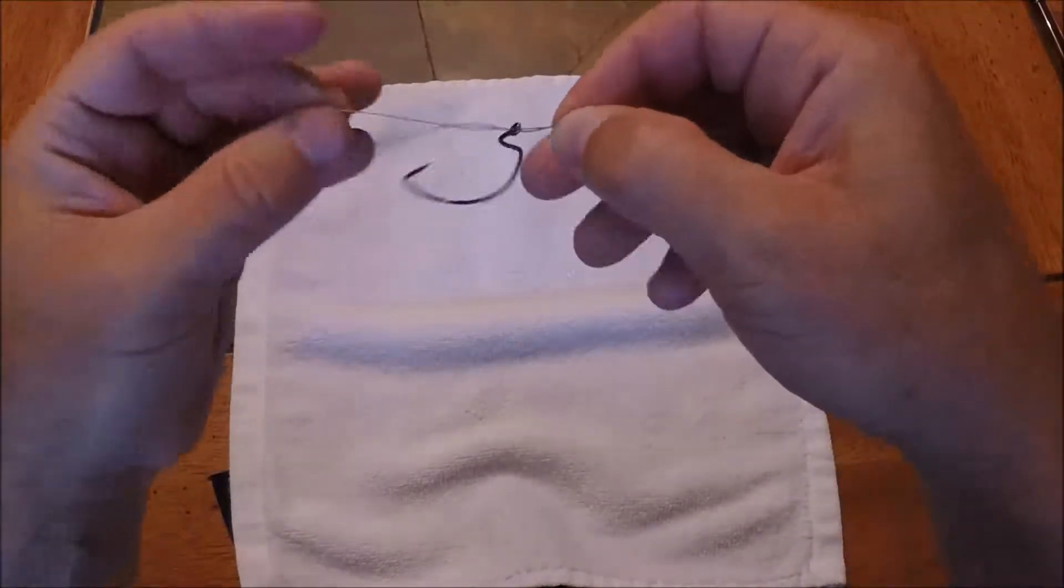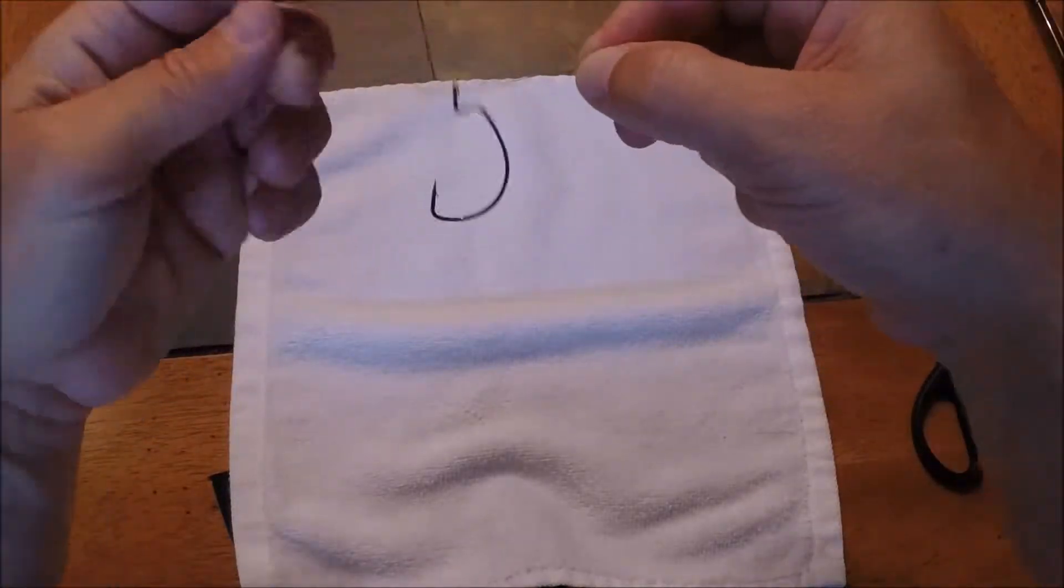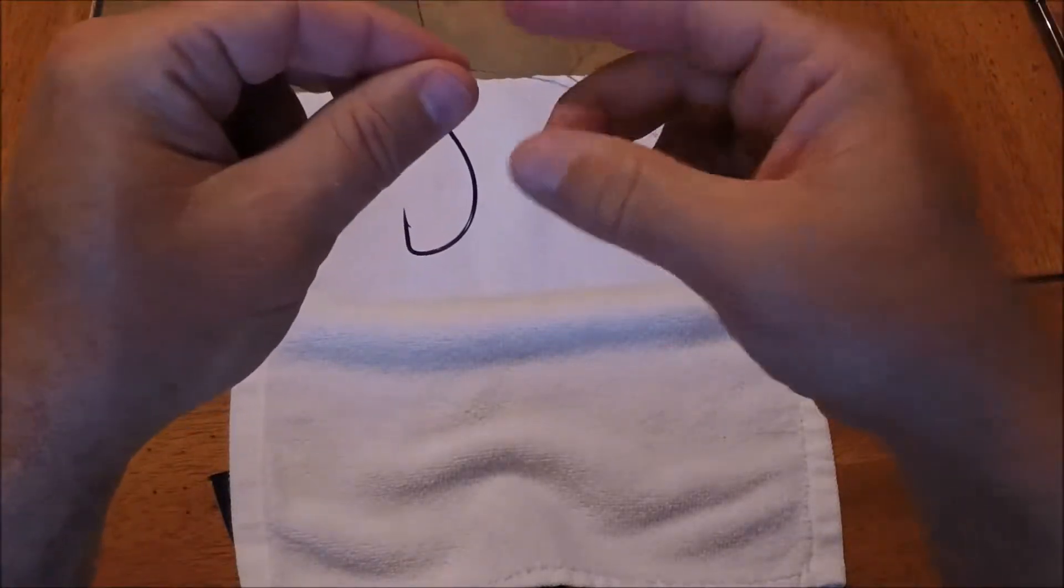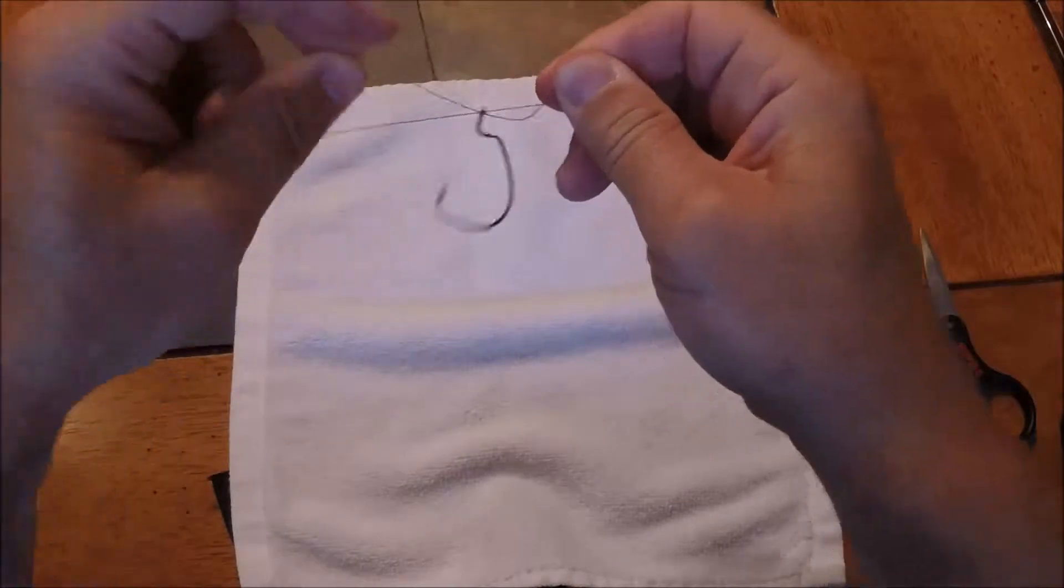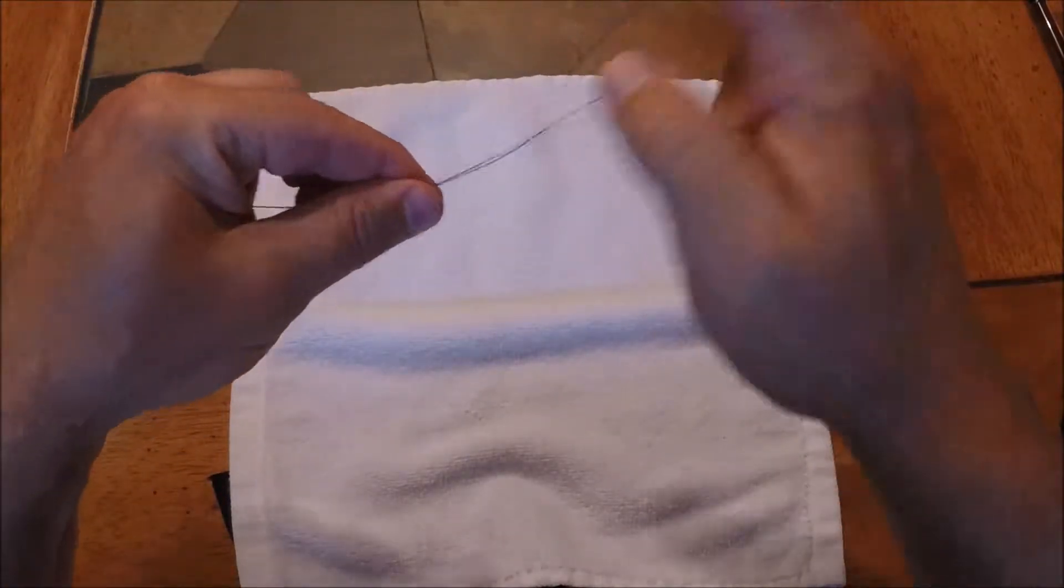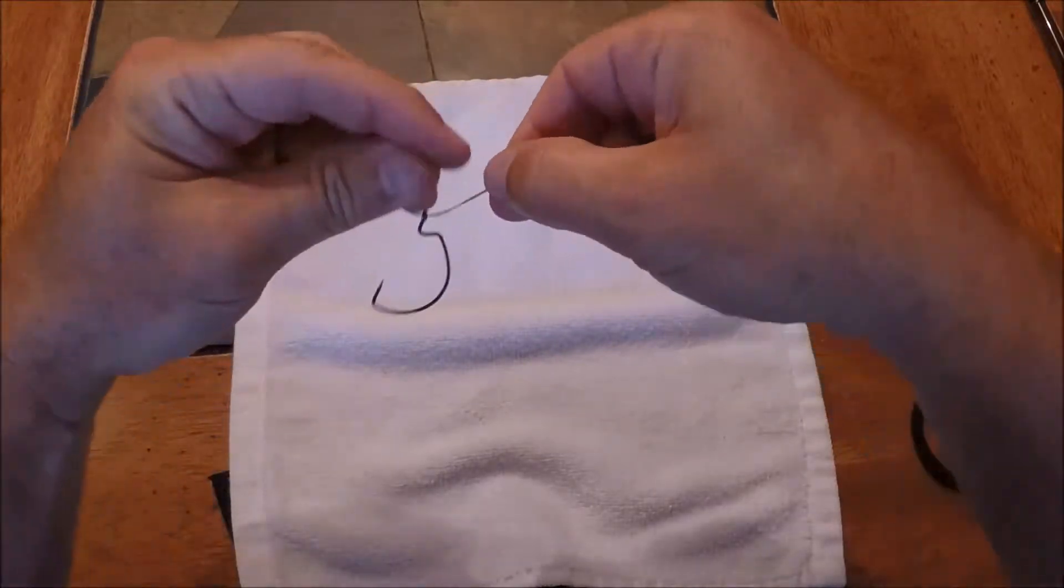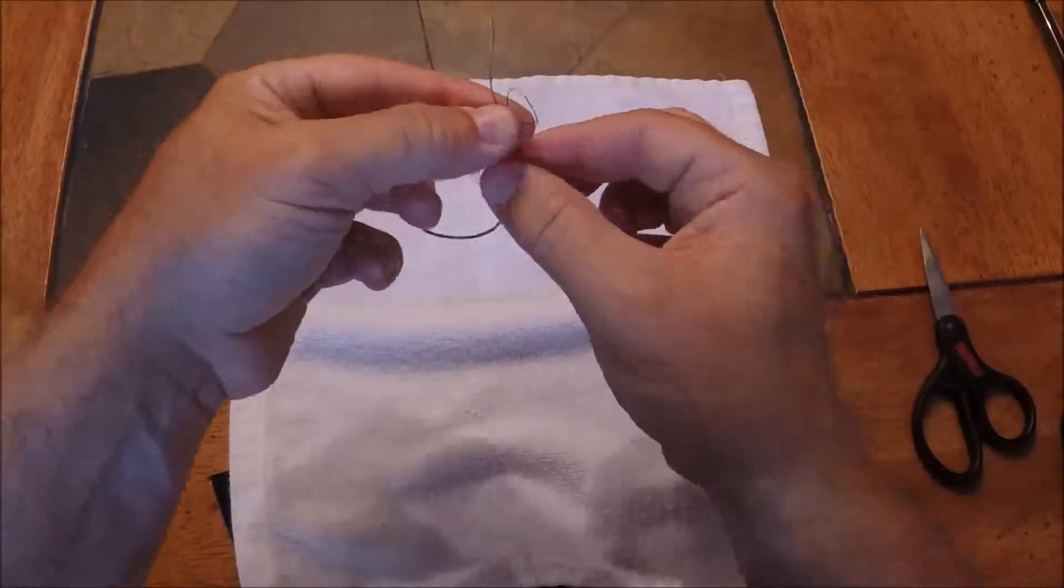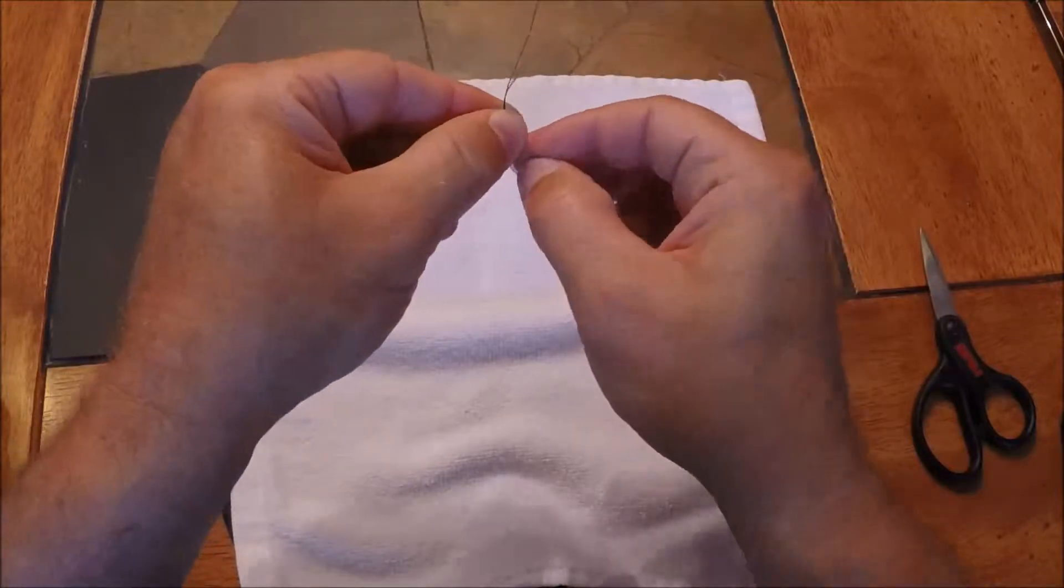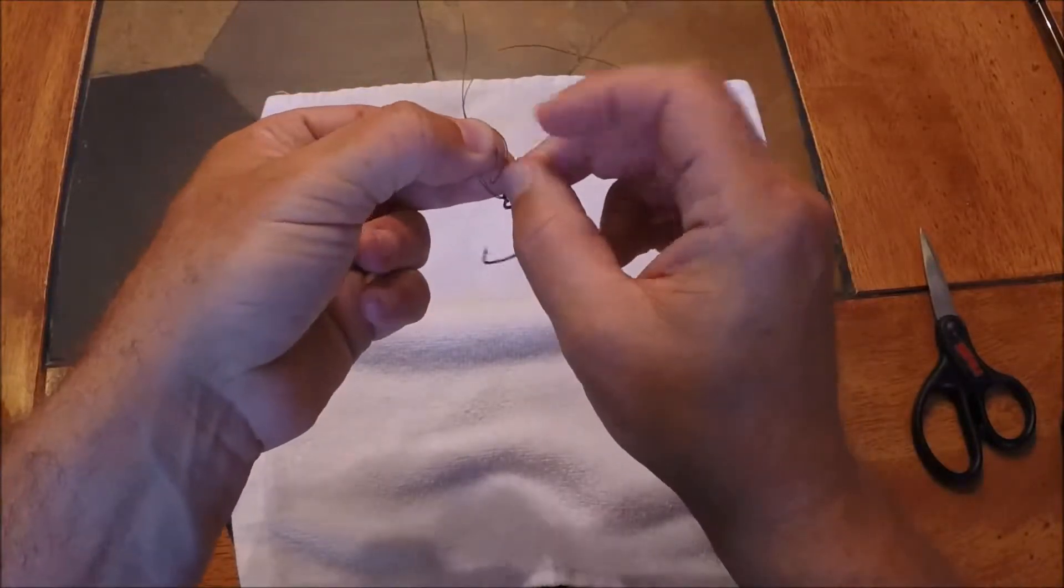So I've doubled my line and the hook is swinging between the double line. At this point what I'm going to do is just a basic overhand knot. I take one end, loop it around, and go through that opening, that loop.